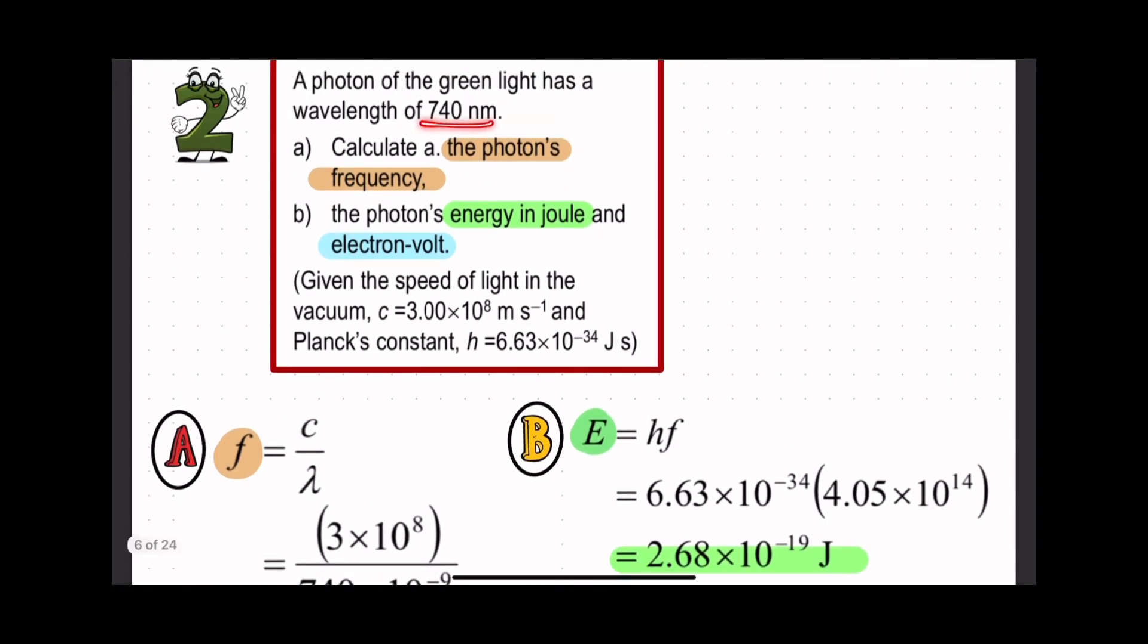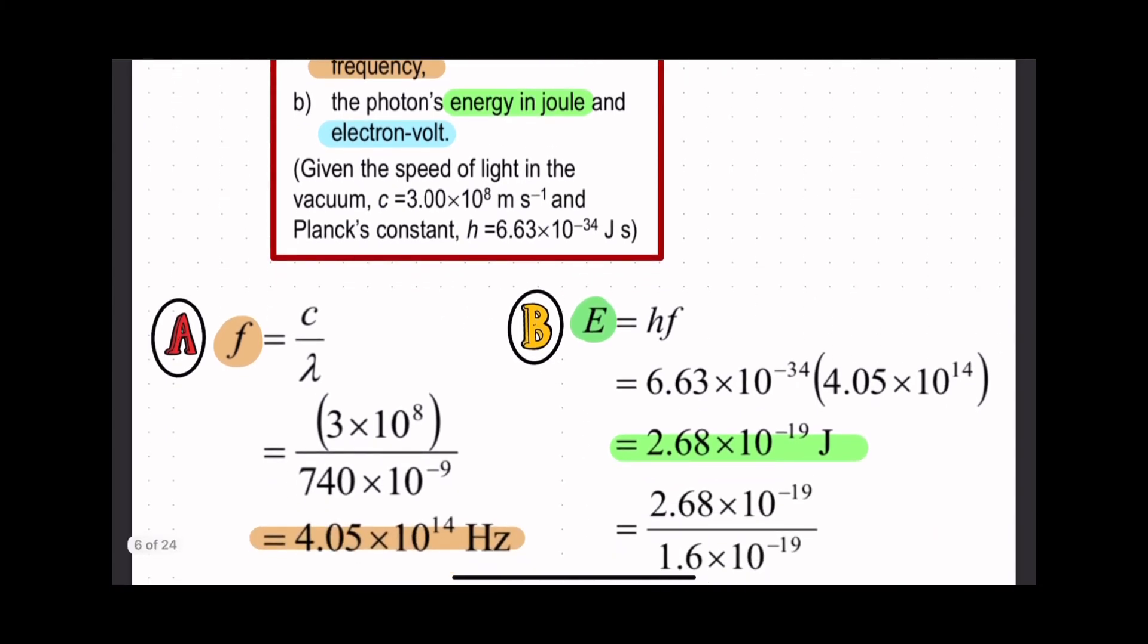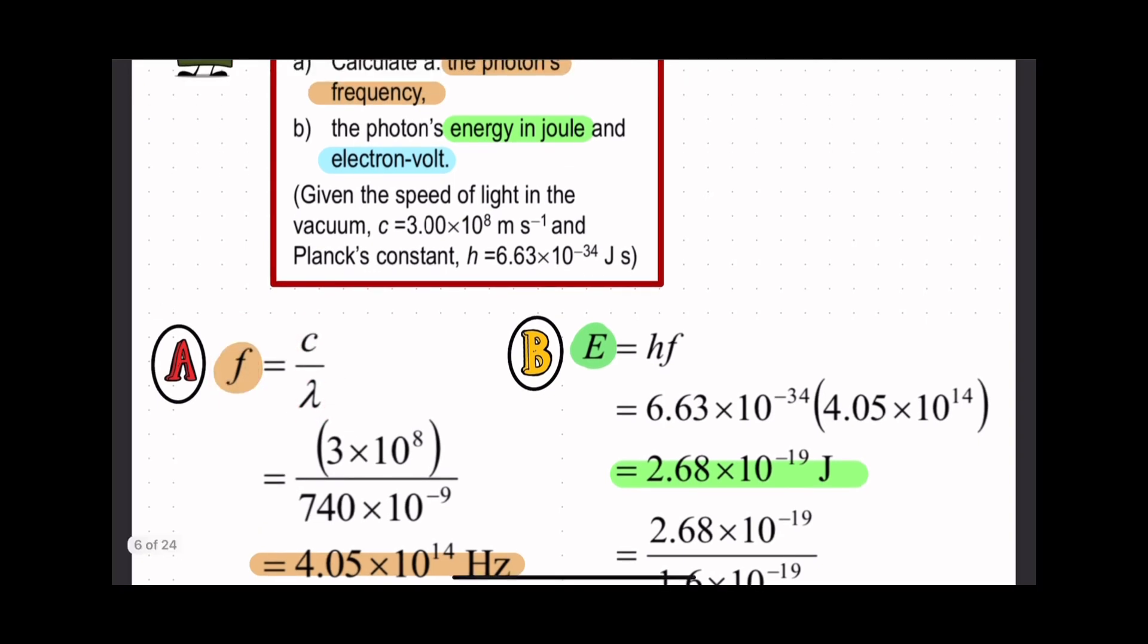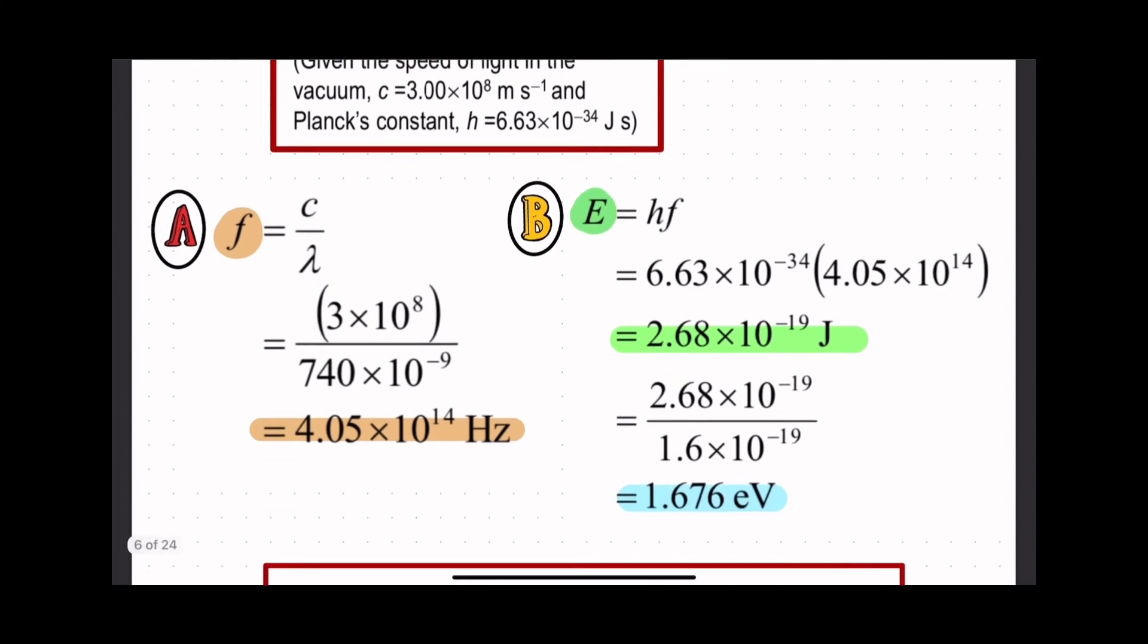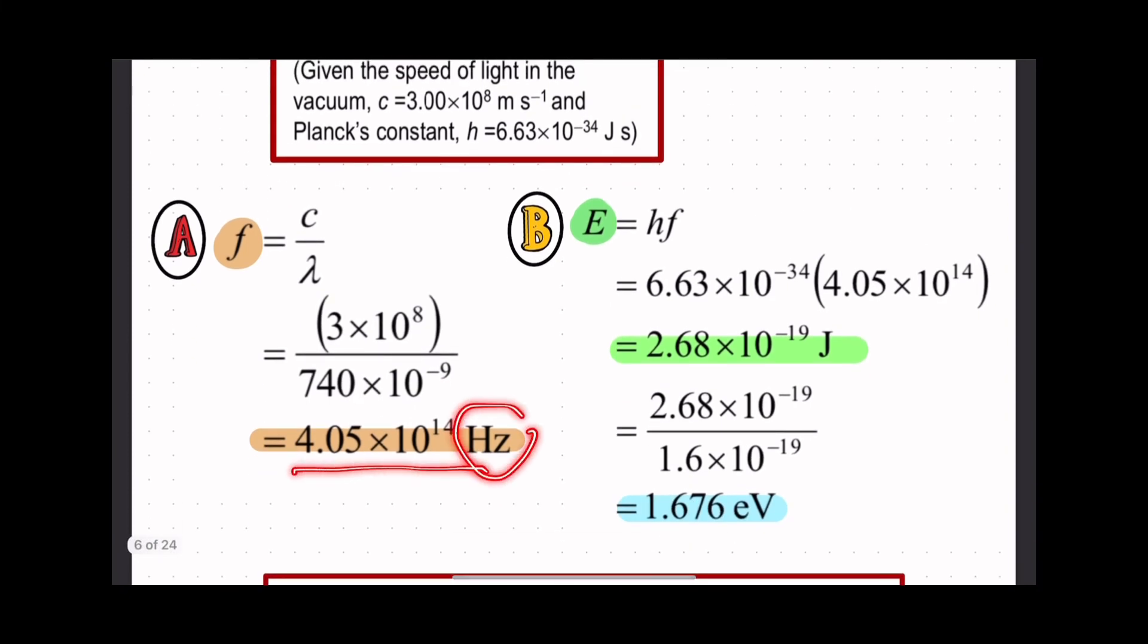Substitute the value for wavelength in meters, and we get frequency in hertz: 4.05 times 10 to the power of 14 hertz.